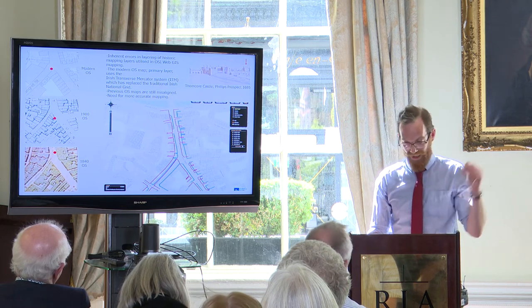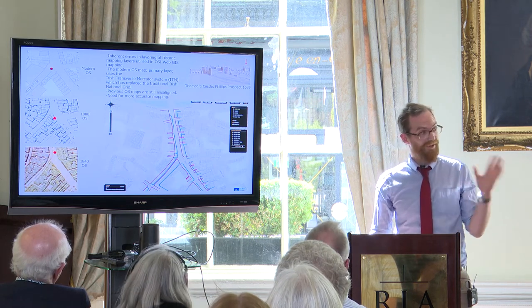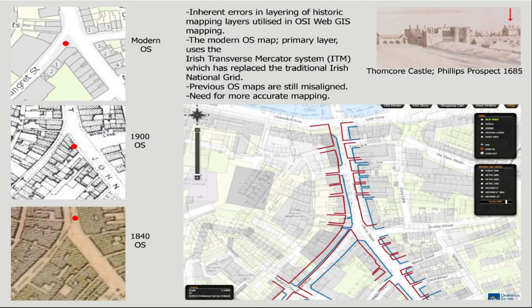One of the problems with digital mapping is that you see Thomond Castle on the junction of Munster Street and John Street. We have the ITM — the Irish Transverse Mercator — where it should be at this point. But if you go between different maps surveyed at different times, using different materials and for different reasons over periods, that dot location shifts. So you have to unstitch the palimpsest, which is one of the main focuses of digital mapping.